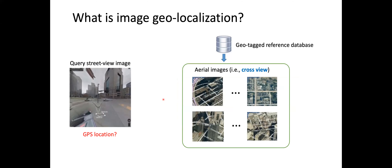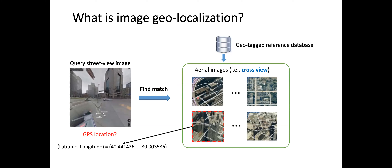Another setting is cross-view geolocalization. For the query street view image, the reference database consists of images from a different view — aerial or satellite images. Satellite images usually have more coverage of a city. The idea is the same: we find a match based on similarity and use the prediction of the reference as the prediction for the query image.